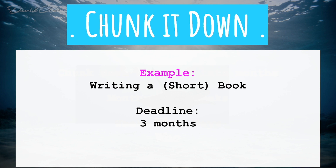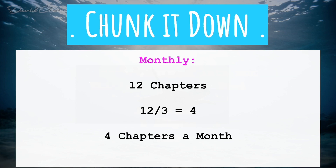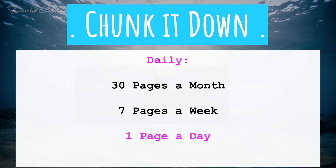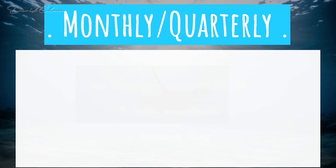Here's an example we'll use throughout the program: writing a short book with a deadline of three months. The monthly goal becomes four chapters a month (12 chapters divided by three months). Weekly, that's about 30 pages a month, or roughly seven pages a week. Daily, that works out to one page a day — our Smart Massive Action daily list.